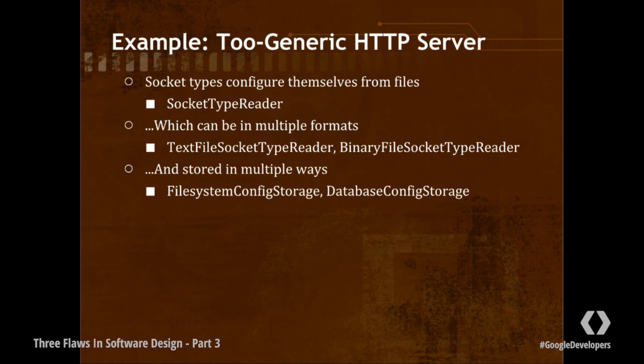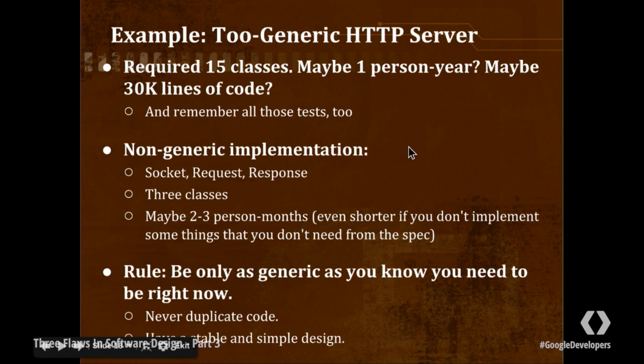So what's wrong with this picture? It required 15 classes. And HTTP is a complex protocol to implement, particularly if you also have to implement a lot of TCP underneath it. I would say all that complexity is going to make it take one person a year to do this, and maybe 30,000 lines of code. And also you're going to have to write way, way more tests than you would have to otherwise, because you're going to have all these generic situations that you have to make sure are actually valid.